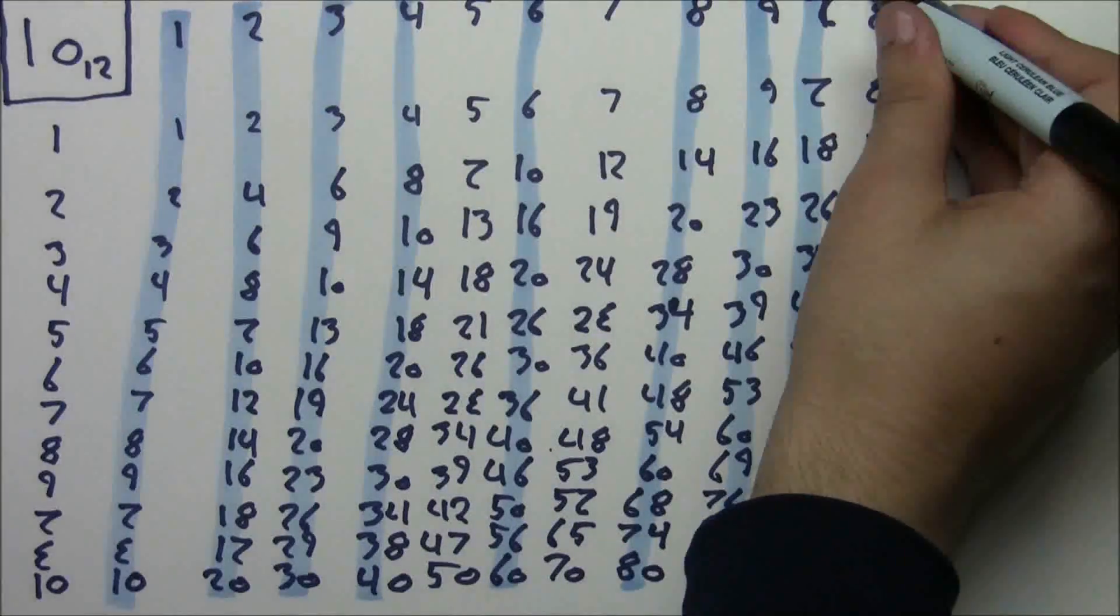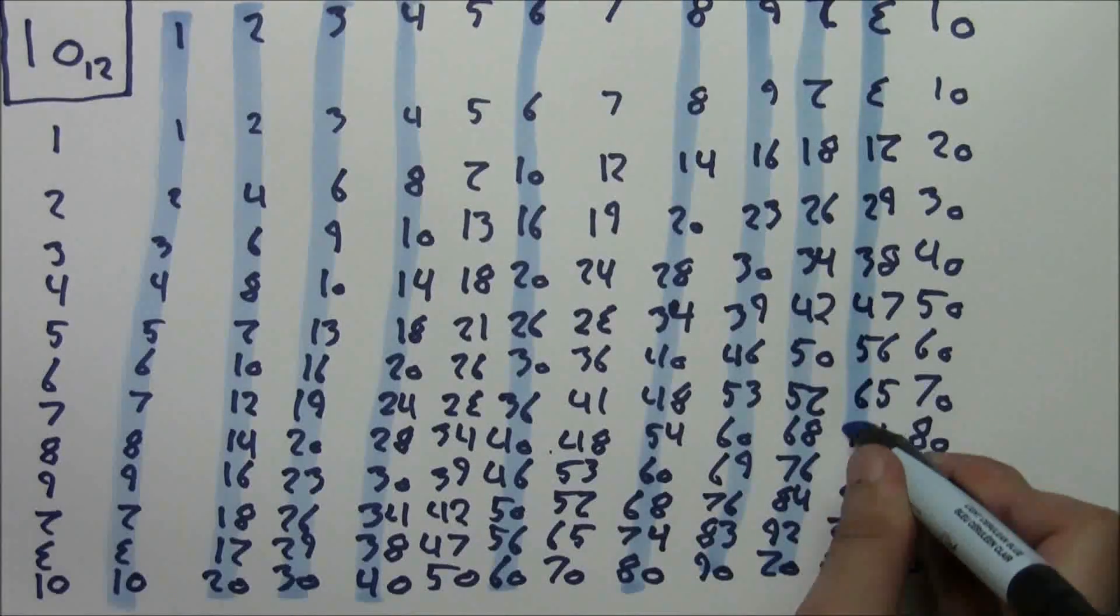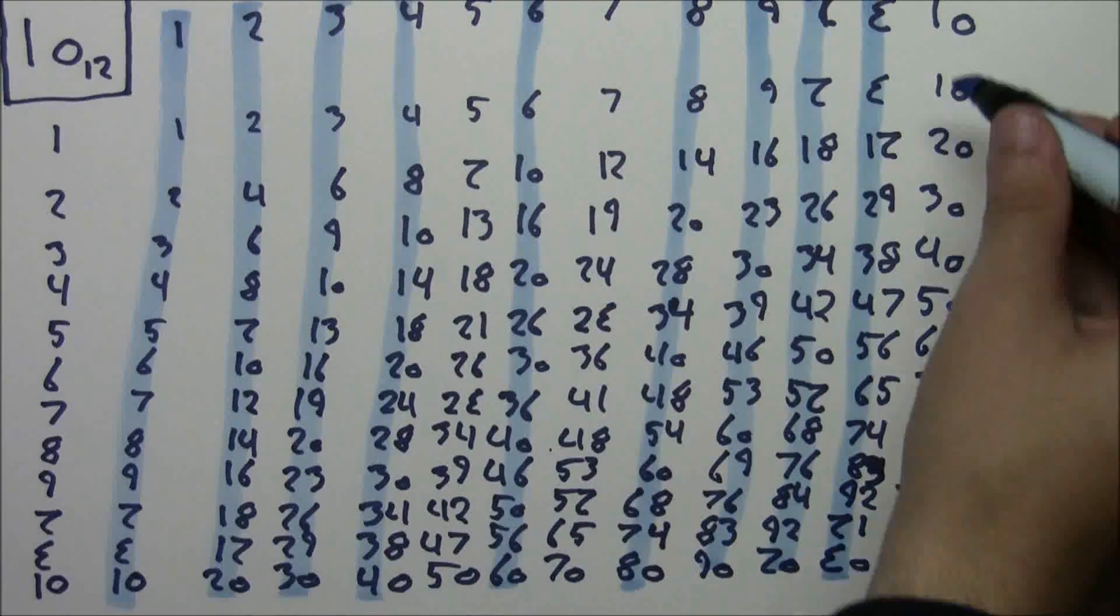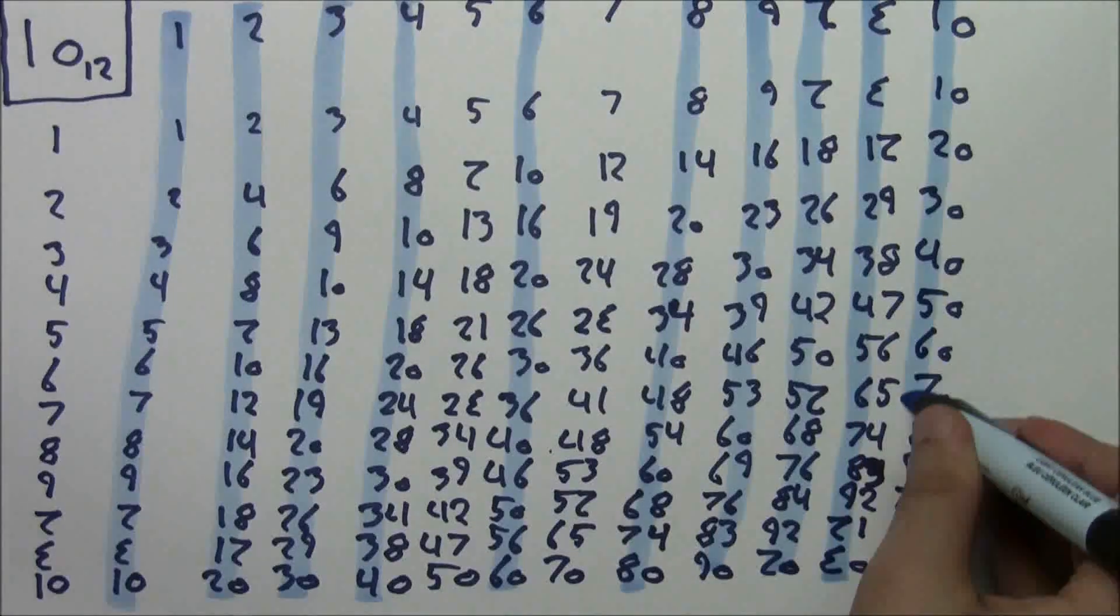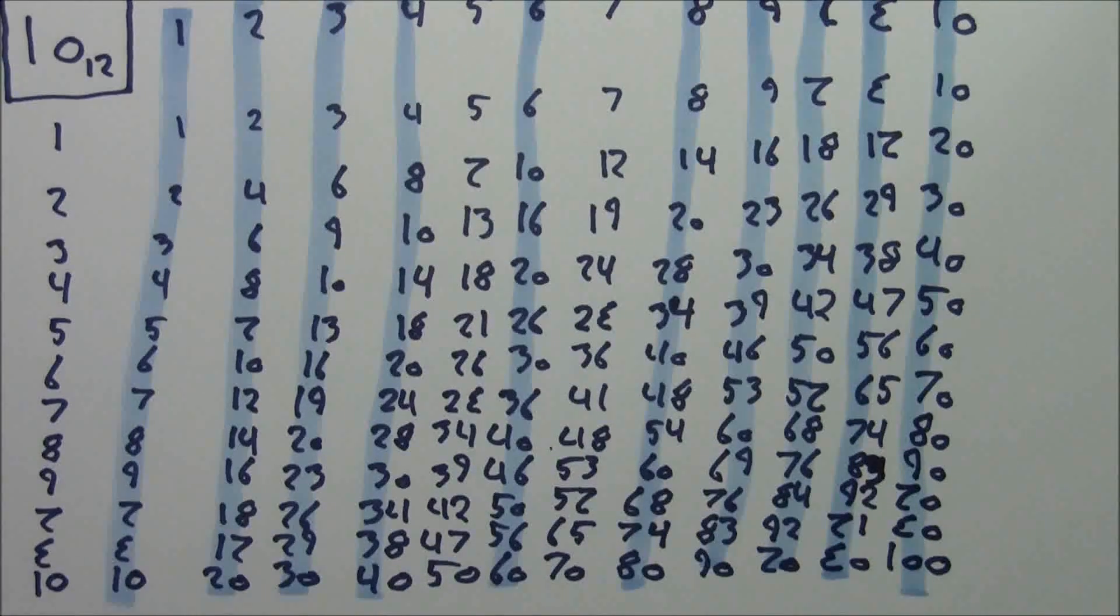And then we get a nice countdown in L. L, deck, 9, 8, 7, 6, 5, 4, 3, 2, 1, 0. And then we, of course, get a pattern in doe as well, which is pretty self-explanatory.